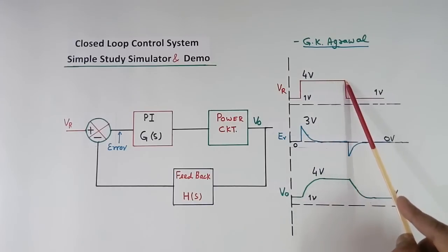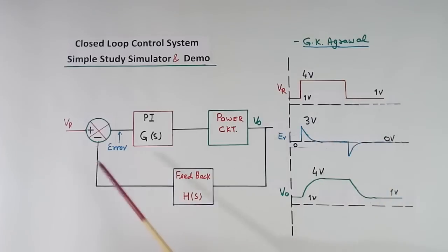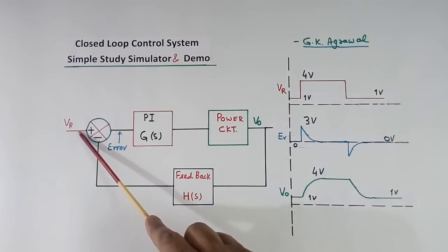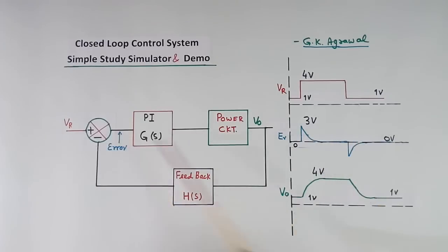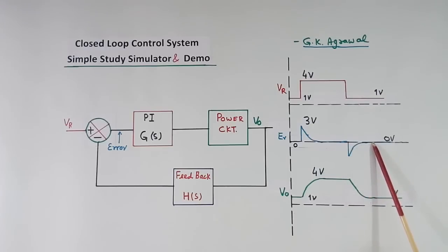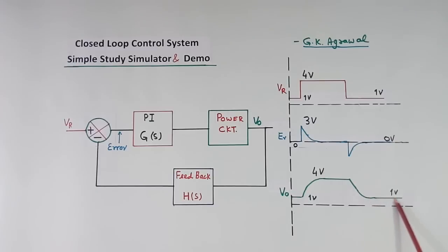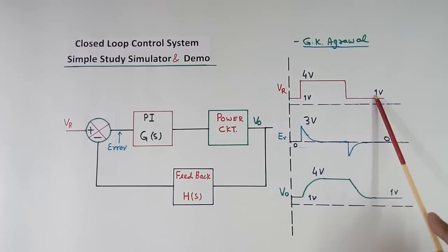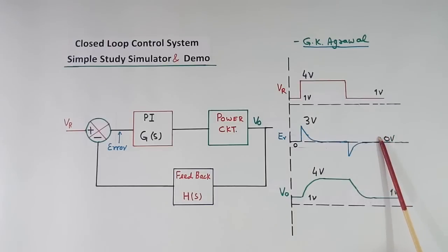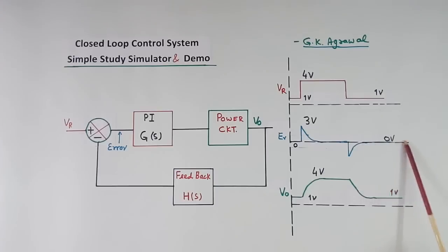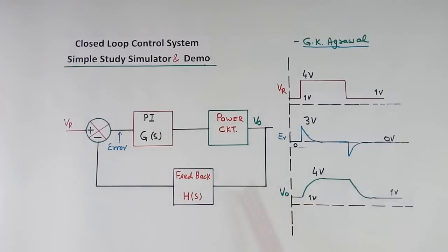Now suppose I reduce the voltage again. So this was 4 volt, here again it has become 1 volt, so negative error will come — minus 3 volt will come. Because of minus error, this will start decreasing until this voltage becomes equal to this voltage. When both are equal, error becomes 0, output will not change, and this system will be stable.